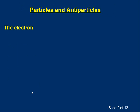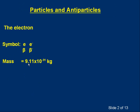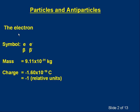Let's talk about electrons. You probably already know a bit about the electron. The symbol is usually e or e with a minus sign. If the electron is produced during beta minus decay, it's referred to as a beta particle with the symbol beta or beta minus. Mass is 9.11 × 10⁻³¹ kilograms. Charge is −1.6 × 10⁻¹⁹ coulombs, or −1 in relative units. The electron is a member of a family of particles called leptons, and it has a lepton number of 1.